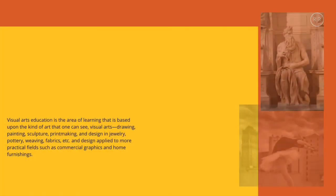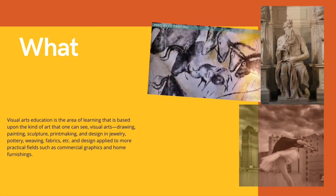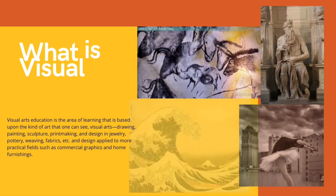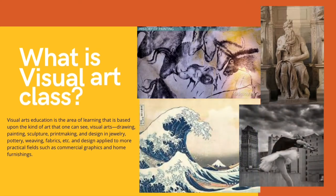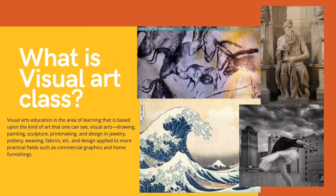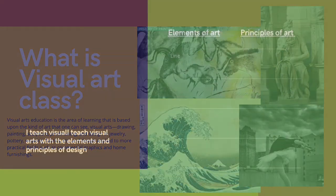Visual art education is an area of learning based upon the kind of art one can see visually: drawing, painting, printmaking, and design and jewelry, pottery, weaving, etc. And designs to move particular fields such as commercial graphics and home furnishing.